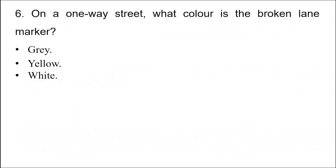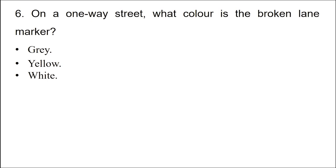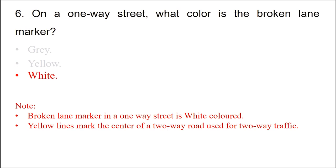Question: On a one-way street, what color is the broken lane marker? Option 1: Gray. Option 2: Yellow. Option 3: White. The answer is option 3: White. Broken lane markers on a one-way street are white. Yellow lines mark the center of a two-way road used for two-way traffic.